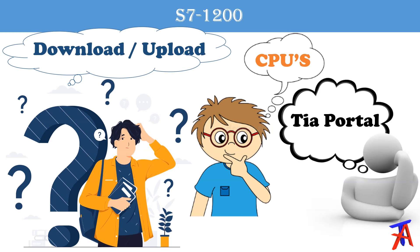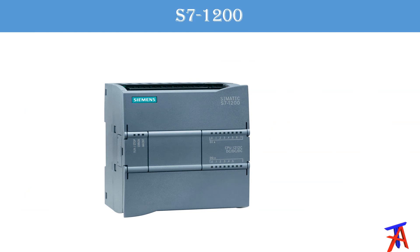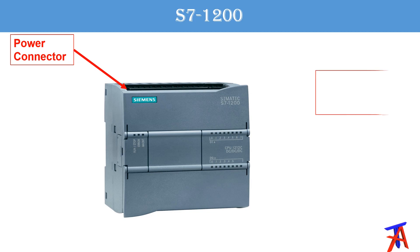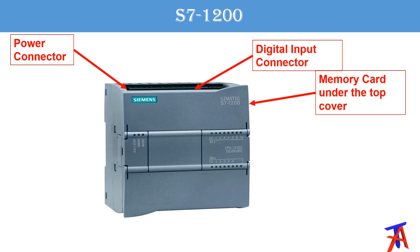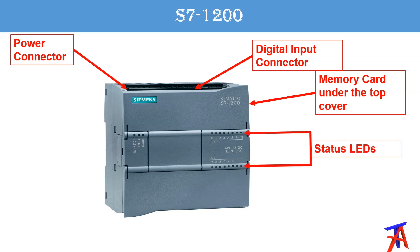First, let's discuss the different CPUs. This is how a CPU of the S7 1200 PLC looks. Here is the power connector where we provide 24V DC or 240V AC depending on the CPU. The memory card is under the flap on the top side, and there are digital input connectors where we connect digital inputs and some analog inputs as well.